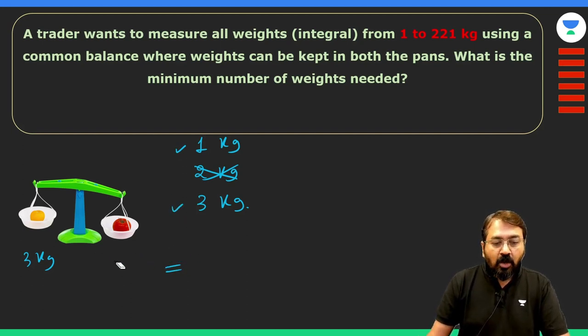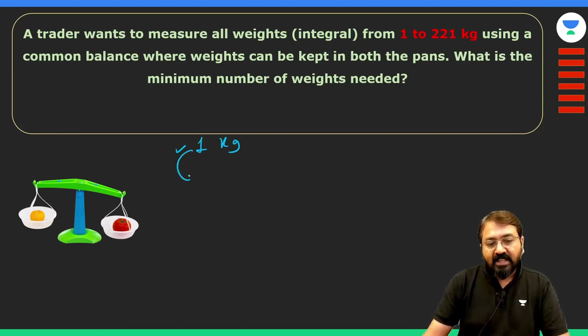Now we can observe some pattern. The pattern will be something like this: first we have taken 1 kg, then we are making double and adding plus 1 to that, so it will come out to be 3 kg. Now total weight that we can measure is 4 kg.